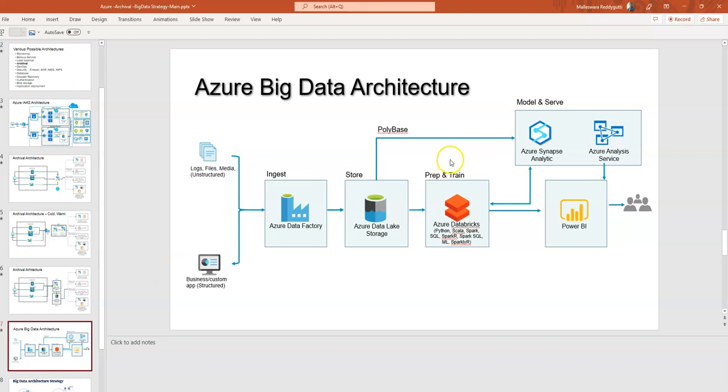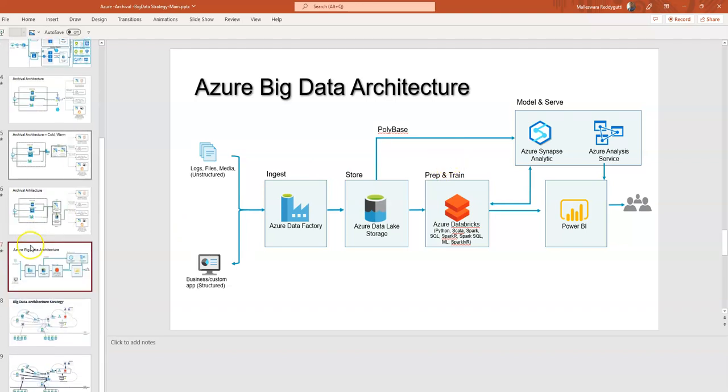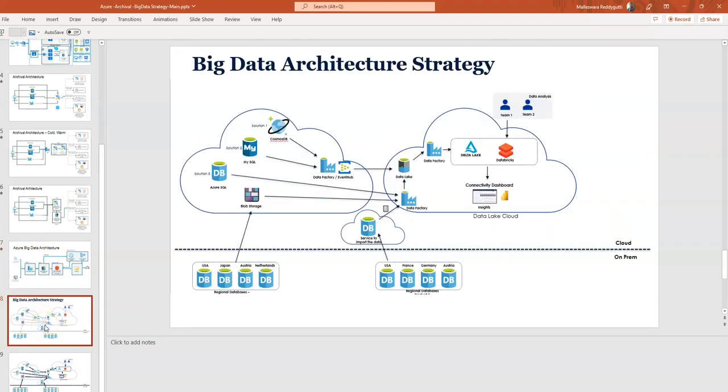These are the four different phases for any big data architecture. The same thing we are trying to replicate in real-time. In real-time, you don't have just one or two databases; you have plenty of databases. You can see a few databases are regional, which are on-premises databases.